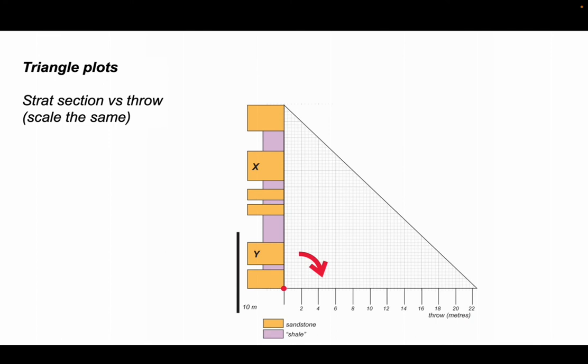The first thing we want to do is re-plot the stratigraphic section along the throw axis. We do that by simply spinning our log section like this, so we've re-plotted the stratigraphy in exactly the same scale along the throw axis.